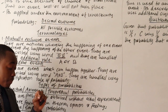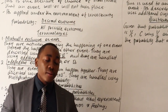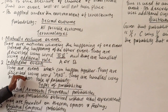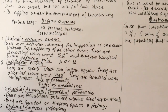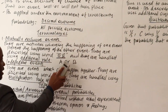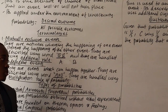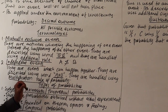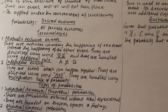Independent events are events where the happening of one does not prohibit or interfere with the happening of the other. They are events which can happen together and are described using the word 'and.' They are handled using the multiplication rule of probability. For example, if we have two projects A and B that are independent, the happening of one does not prohibit the happening of the other.